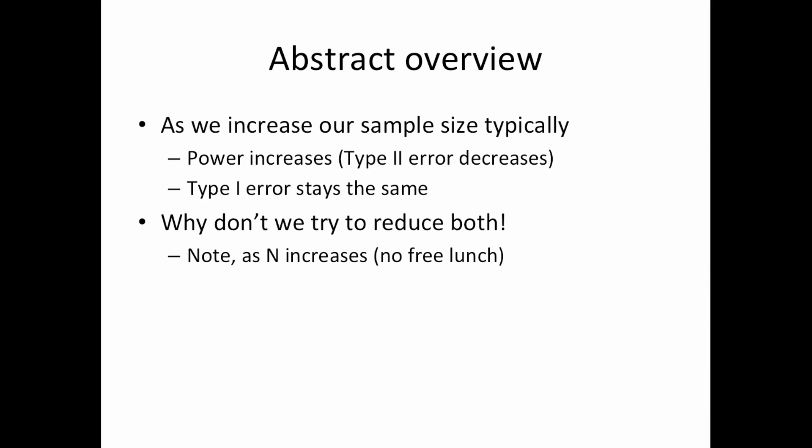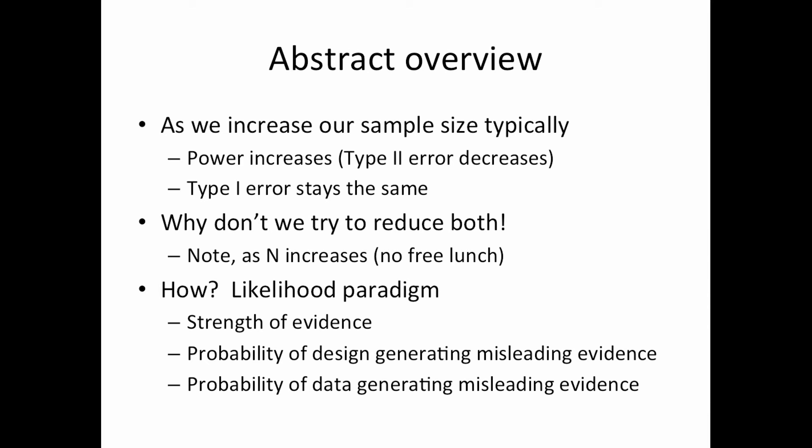So let's reduce both, but there's no free lunch. Note, you have to increase the sample size. In this paper, it's a single subject analysis. So sample size is the length of your fMRI run. Right, and this is an fMRI-based paper. So how do they do this? They use something called the likelihood paradigm. So when I first saw this, I'm like, what? They use likelihood ratio tests? No, it's related, but different. And I'll try to explain that again. So the likelihood paradigm uses three pieces of information. The strength of the evidence, which is the likelihood ratio. The probability of the design generating misleading evidence. And the probability of data generating misleading evidence.